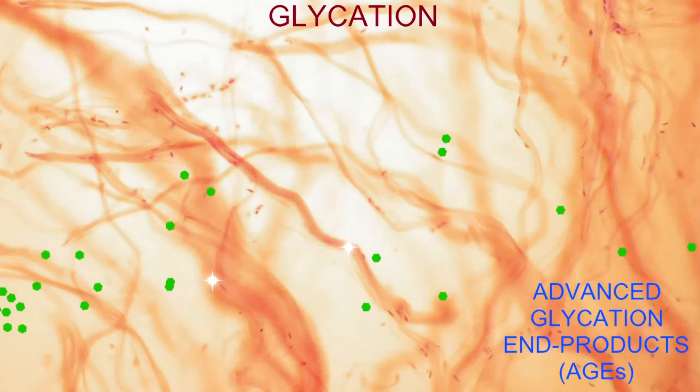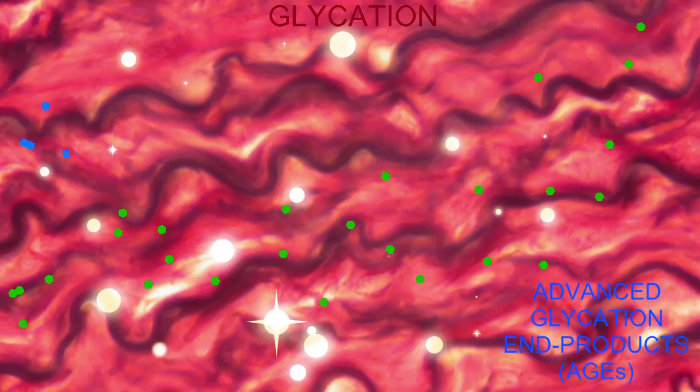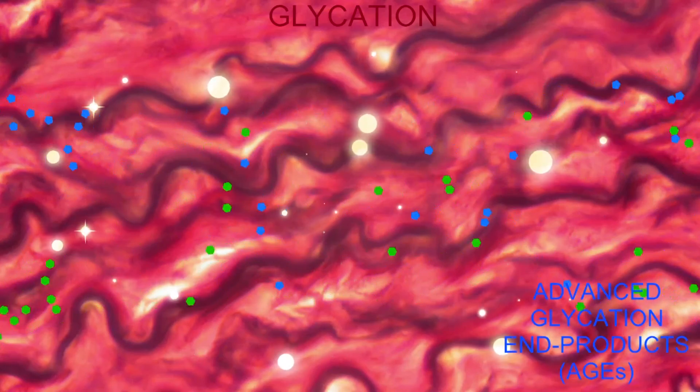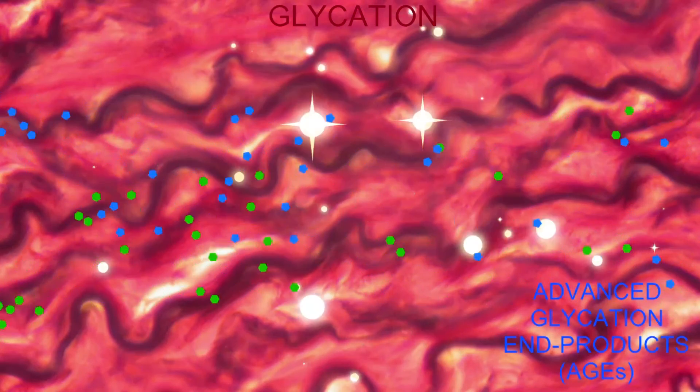In bone, this can increase the risk of fracture. When glycation occurs to the protein elastin in the wall of the aorta, this can result in stiffness and promote high blood pressure.